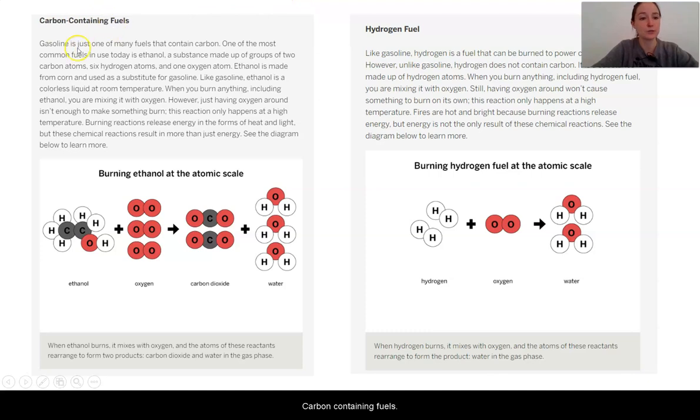Carbon containing fuels. Gasoline is just one of many fuels that contain carbon. One of the most common fuels in use today is ethanol, a substance made up of groups of two carbon atoms, six hydrogen atoms, and one oxygen atom. Ethanol is made from corn and used as a substitute for gasoline. Like gasoline, ethanol is a colorless liquid at room temperature. When you burn anything, including ethanol, you are mixing it with oxygen.